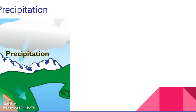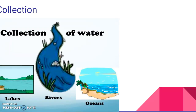Precipitation will be in the form of either rain, hail, sleet, or snow. Once the water falls through precipitation, it is collected into bodies of water such as lakes, rivers, and oceans. Here you can see that lakes, rivers, and oceans are the water that collects precipitation.